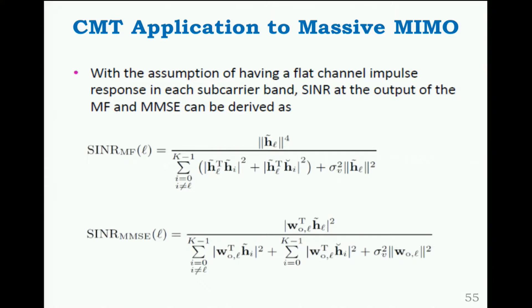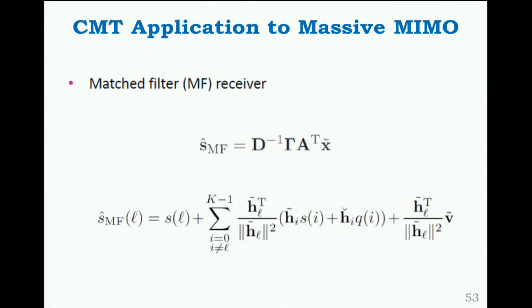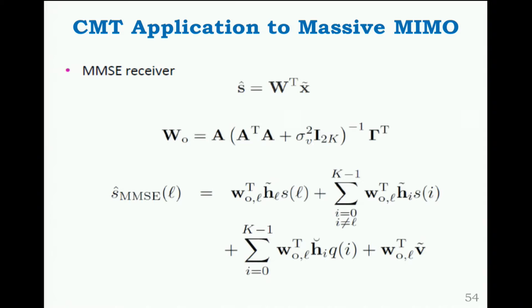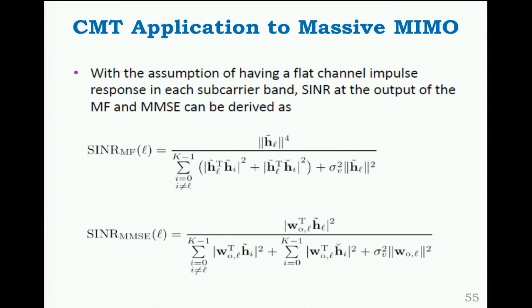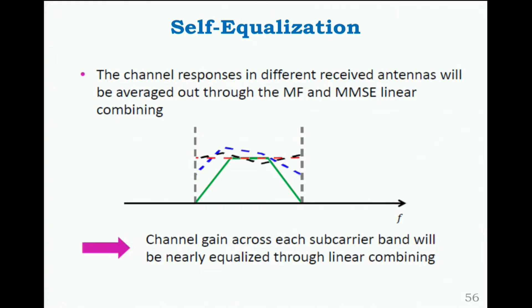Likewise you can write the MMSE received signal — it's in the papers. You can also write the SINR for MMSE, which looks different because they are different receivers. More interestingly, we look at the SINR over the different subcarriers. One thing we emphasize is what we call self-equalization — essentially a reproduction of what was called channel hardening in 4G systems where you used spatial diversity like Alamouti. The principle of diversity is that you average out fades.